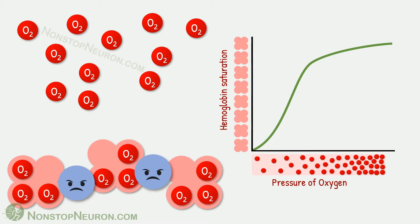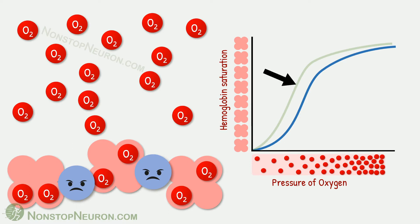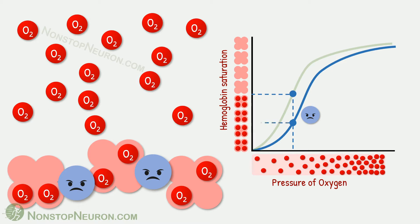Now some factors decrease the affinity of hemoglobin for oxygen. In the presence of such substances, less oxygen binds with hemoglobin at the same partial pressure. This results in a rightward shift in the oxygen hemoglobin dissociation curve. This is the initial curve in the absence of that factor — this much oxygen pressure was causing this much saturation of hemoglobin. In the presence of that factor, the same partial pressure of oxygen causes less saturation of hemoglobin, because of decreased affinity. In simple words, rightward shift in the curve means the affinity of hemoglobin for oxygen is decreased.